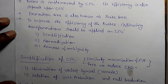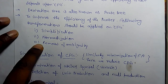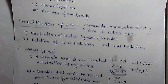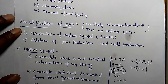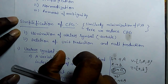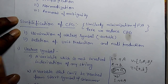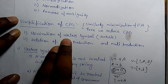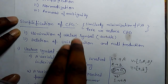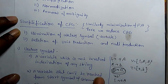To improve the efficiency of parser we perform simplification, normalization and removal of ambiguity. The first term is simplification of context free grammar. For reducing the context free grammar we eliminate useless symbols, unit production, and null production. In further we will discuss useless symbols, unit production and null production removal.